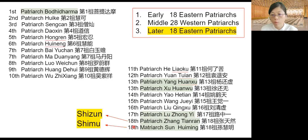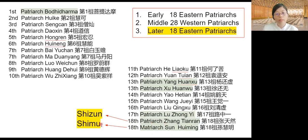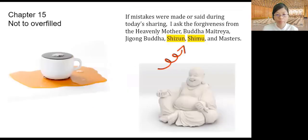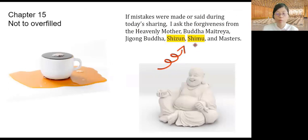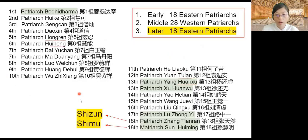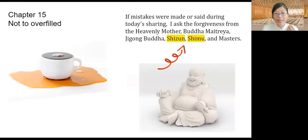The 17th Patriarch, Lu Zhongyi, is the reincarnation of Buddha Maitreya. Usually in the Tao Temple we see a Buddha Maitreya statue in the middle — that's his incarnation. The 18th Patriarchs are Patriarch Dang Tianran and Maitreya Sun Huiming, whom we call Si Zun and Si Mu. I always end my sessions giving thanks to Si Zun and Si Mu, because they are our last two Patriarchs in the last era.